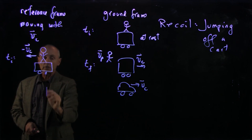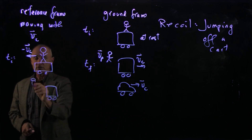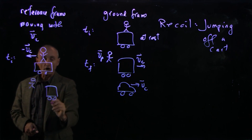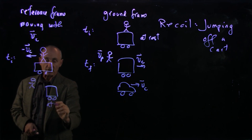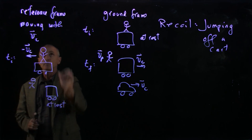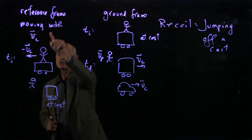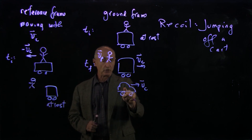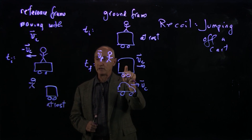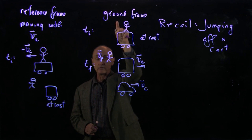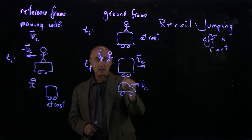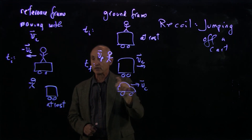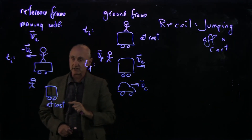After the jump, in this moving frame, the cart is at rest. This is because we are in the reference frame moving with vc. If you're in a car moving at the same speed that the cart has in the ground frame, then in your frame, the cart looks like it's at rest.